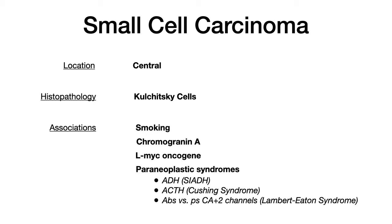Without question, the highest-yield part of small cell carcinoma for USMLE and COMLEX is being able to spot when they give you a paraneoplastic syndrome. A paraneoplastic syndrome is a clinical syndrome due to an incorrect immune response to the cancer — that immune response inadvertently causes something functionally identical to SIADH, Cushing syndrome, or Lambert-Eaton syndrome. You can't differentiate them from their native syndromes, so if you're taking an exam, be on the lookout for these three.